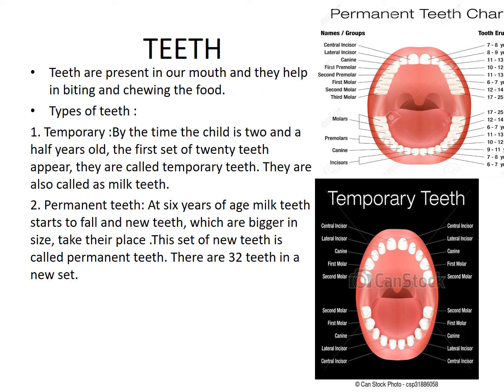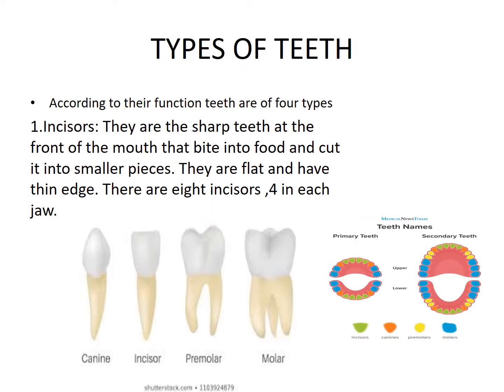Now coming to permanent teeth. At the age of six years, the milk teeth start to fall and new teeth appear which are bigger than the temporary teeth. They take the place of the temporary teeth. This new set of teeth is called permanent teeth, and there are 32 teeth in this new set.